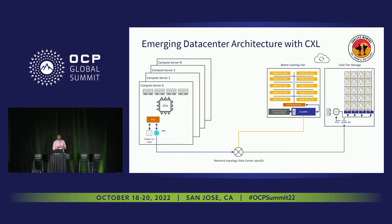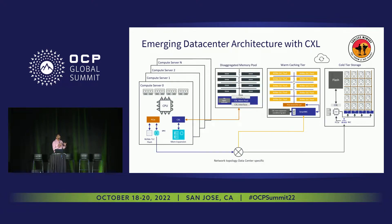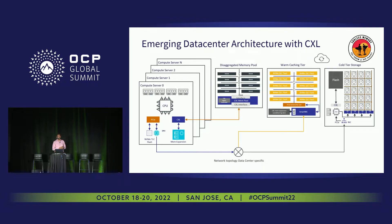At a higher level, this is how we view the market. You can see compute servers connected at the back end using Ethernet, with flash — TLC or QLC for your warm tier — and hard drives for the cold tier. But we really see a new disaggregated memory pool coming into the server rack itself. This is the game-changing thing we're looking for, and while it's a few years out, this is how we see the whole industry evolving.